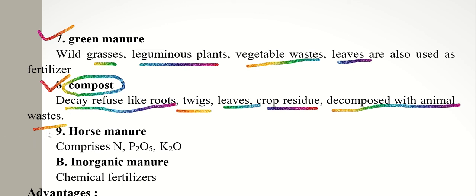Horse manure consists of 76% moisture, 21% organic matter, and 4% mineral matter. The dung of horses mainly comprises nitrogen, P2O5, and K2O. These are some organic manures that can be used in the pond as fertilizers.